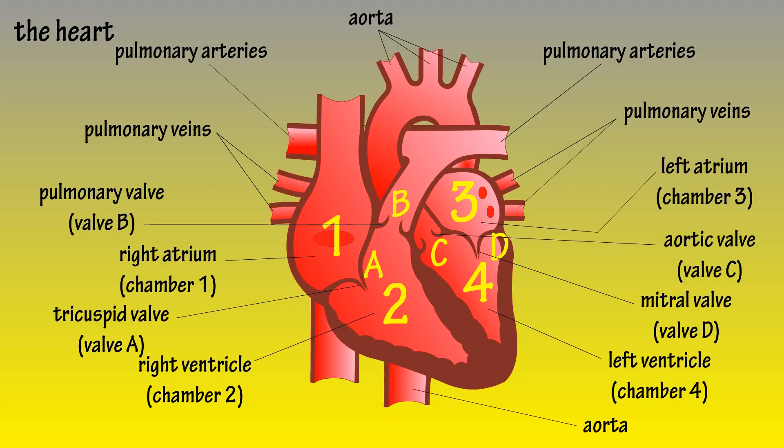Next we have the aorta, which is the largest artery in the body and it carries oxygenated blood to the upper and lower regions of the body. The last part of our diagram is the vena cava, which transports deoxygenated blood — shown here in blue — from the body to the heart.